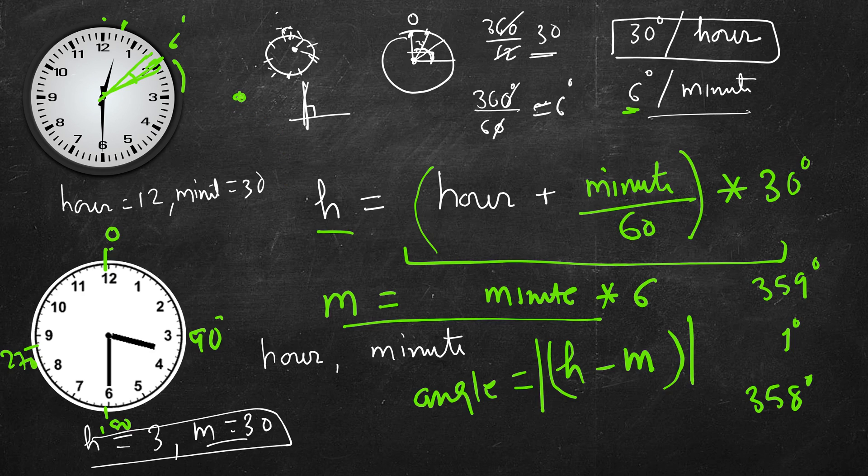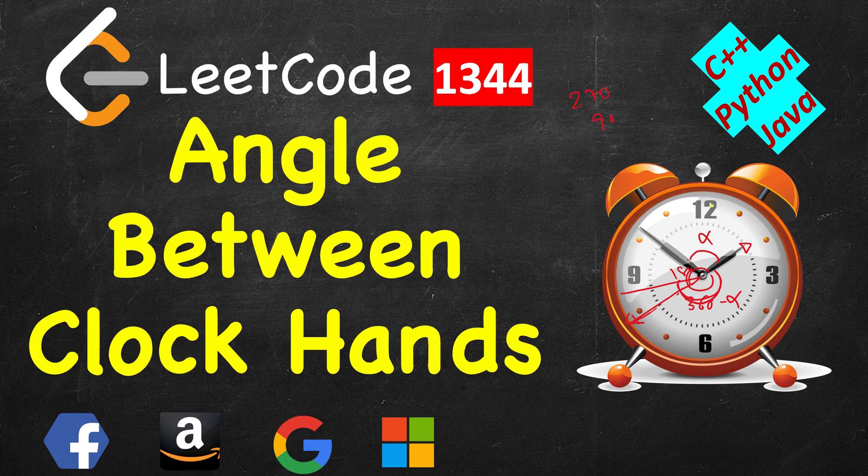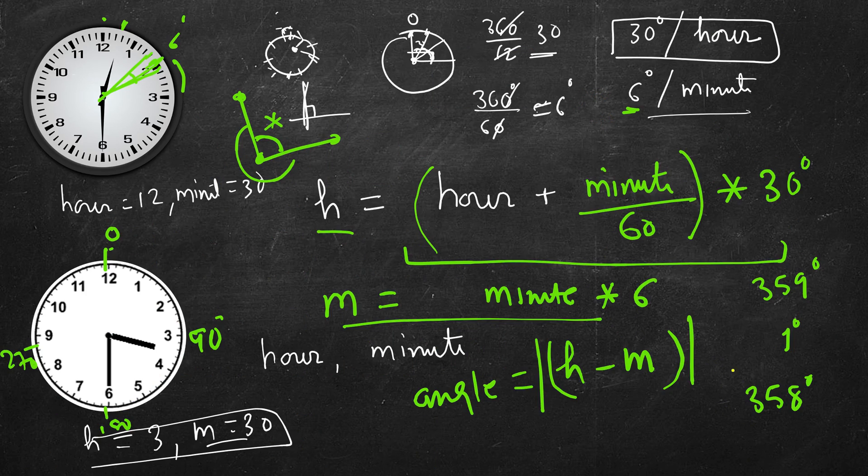So if our calculation is like this, there are two angles always, one bigger, one smaller. One will be more than 180, one will be less than 180. If they are exactly equal, both will be 180. So we have to return this one, the smaller one. So if it is more than 180, what we do? This angle is alpha. This angle is 360 minus alpha. So instead of this angle, we will return 360 minus this.